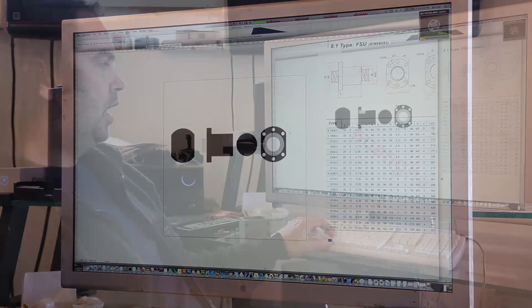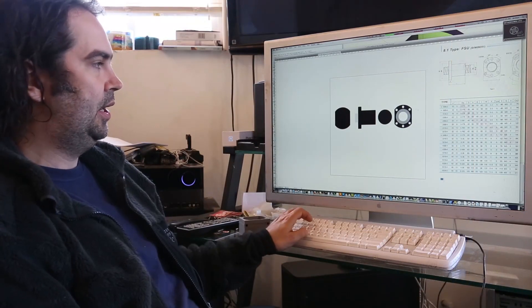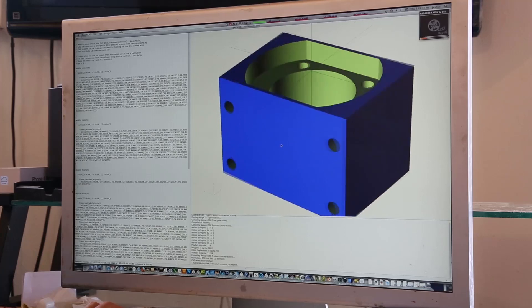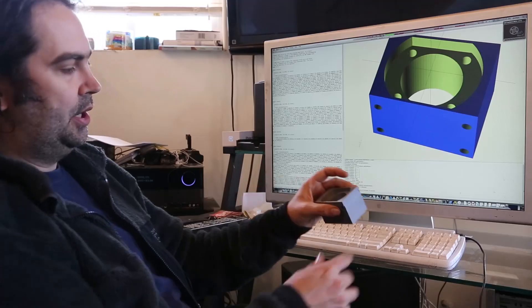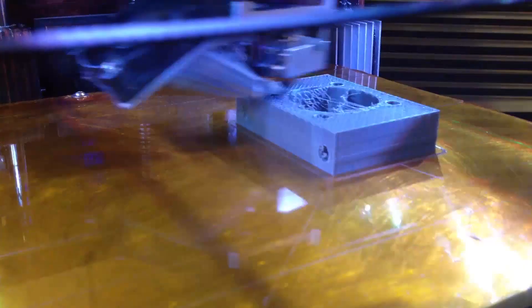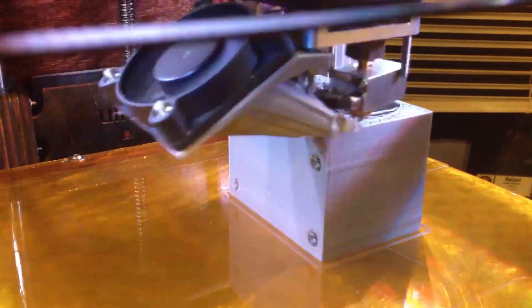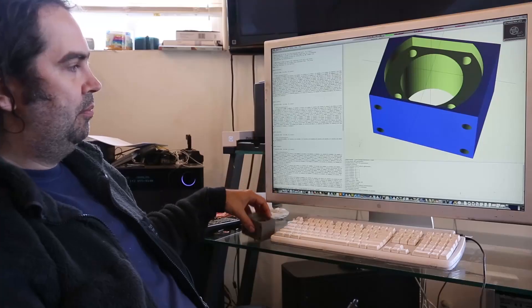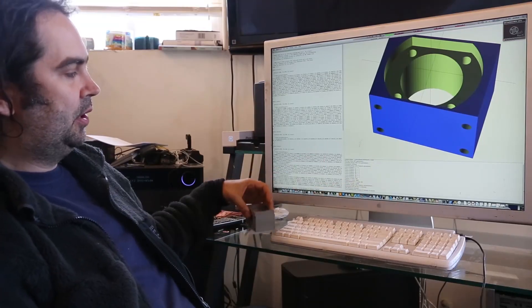Then what I did is I imported the shapes that I needed into OpenSCAD. So there it is in OpenSCAD. Then next, we did a 3D print of it, and there's the 3D print. Then I test fitted it on the ball screw.